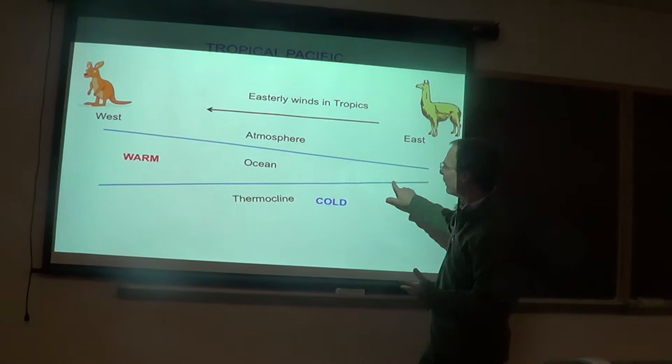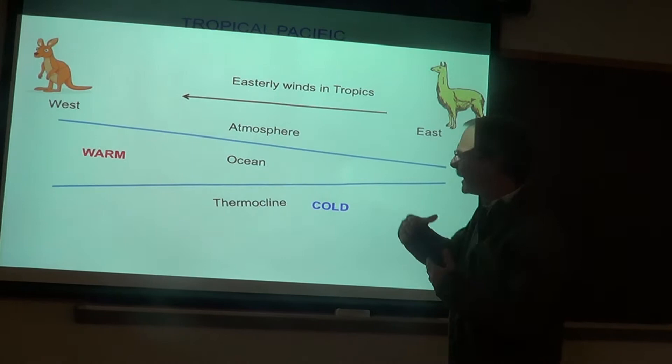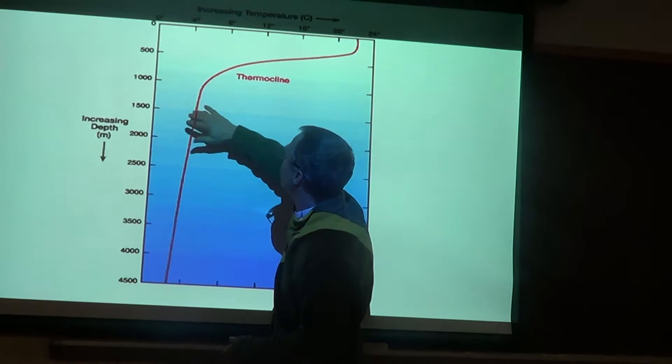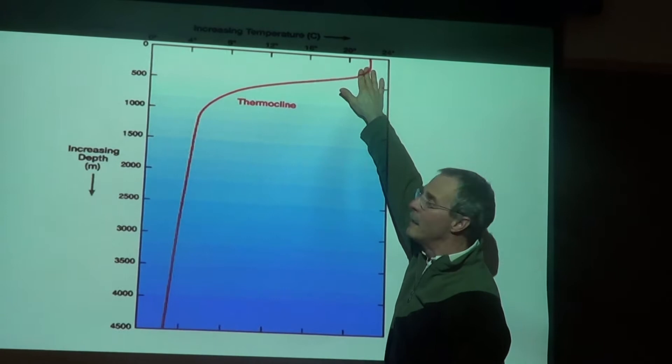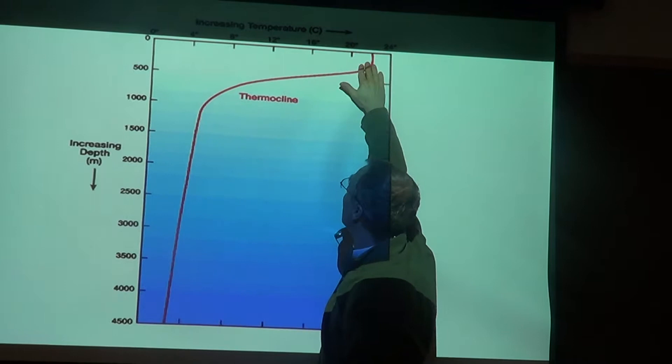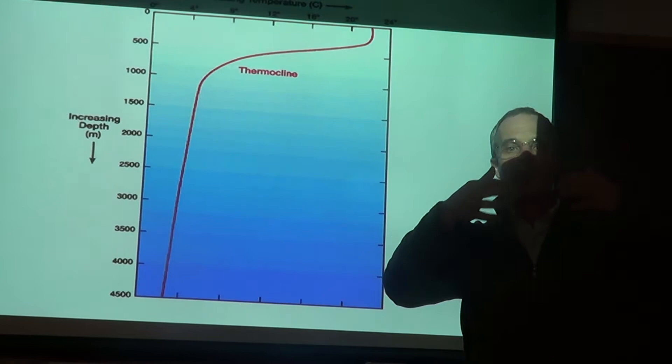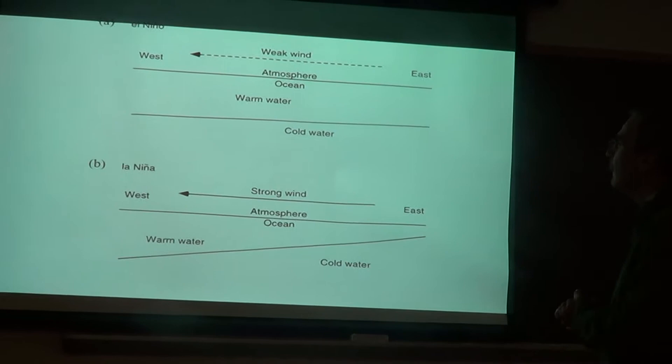The other thing to note is the thermocline — the boundary in the ocean that separates warm surface water from the colder water below it. Close to the surface in the tropics, the water is very warm, but then the temperature declines very quickly with depth. This sharp change from very warm water to very cool water over a small depth range is called the thermocline. We can think of it as the boundary between warm surface water and cold subsurface water.